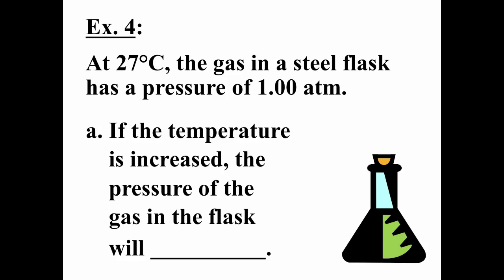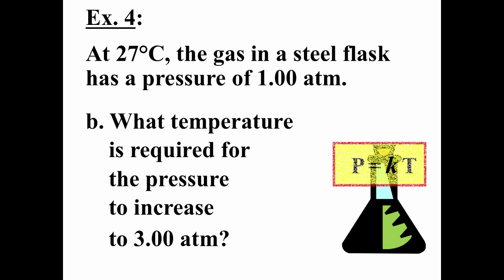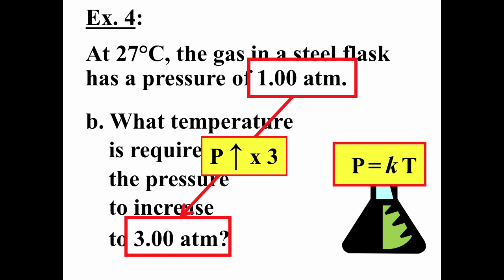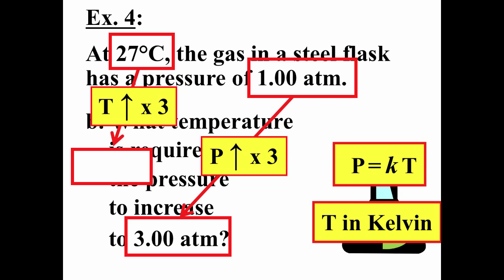Another example: a gas in a flask at 1 atmosphere of pressure has its temperature increased. The pressure goes from one atmosphere to three atmospheres — a factor of three increase. Since pressure and temperature are directly proportional, the temperature must also increase by a factor of three. Converting to Kelvin, the temperature goes from 300 Kelvin up to 900 Kelvin, an increase by a factor of three.